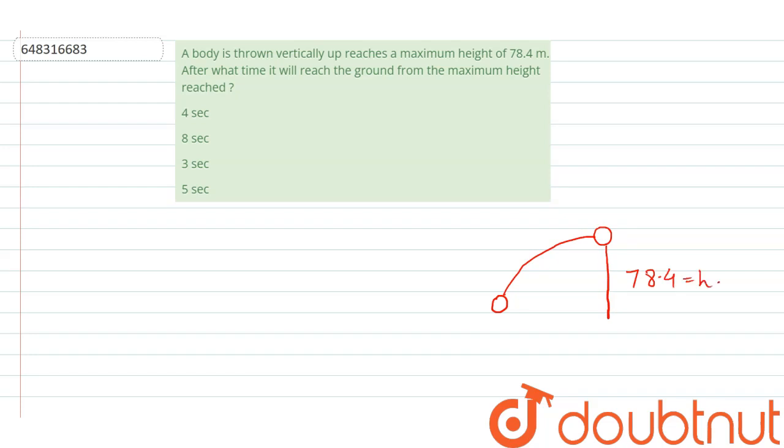We know that at maximum height, velocity v equals zero. Now we need to find the time, so we use the simple kinematic equation: s = ut + (1/2)at².